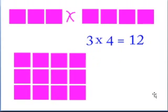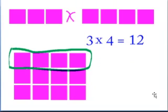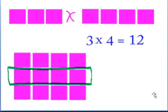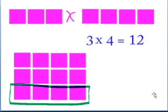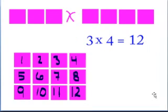But what happens when it's 3 times 4? Well, now we have one group of 4 plus an additional group of 4 plus an additional group of 4, and that too equals 12.